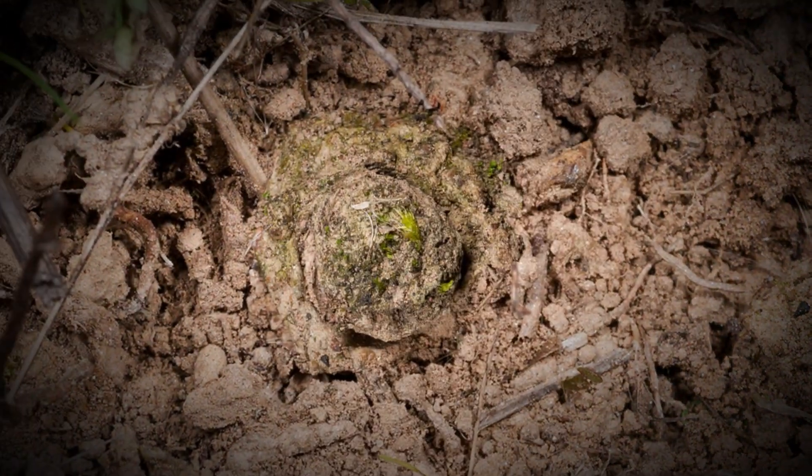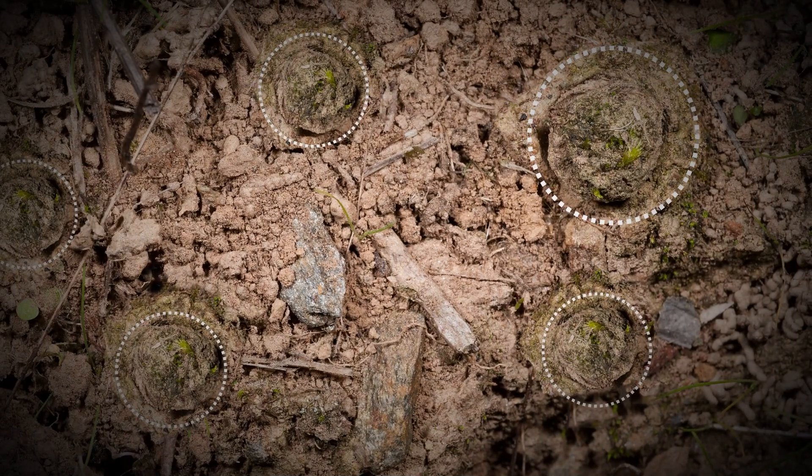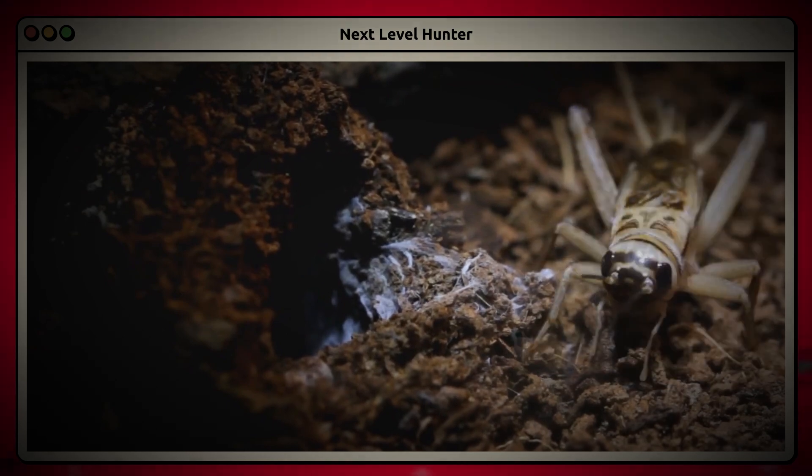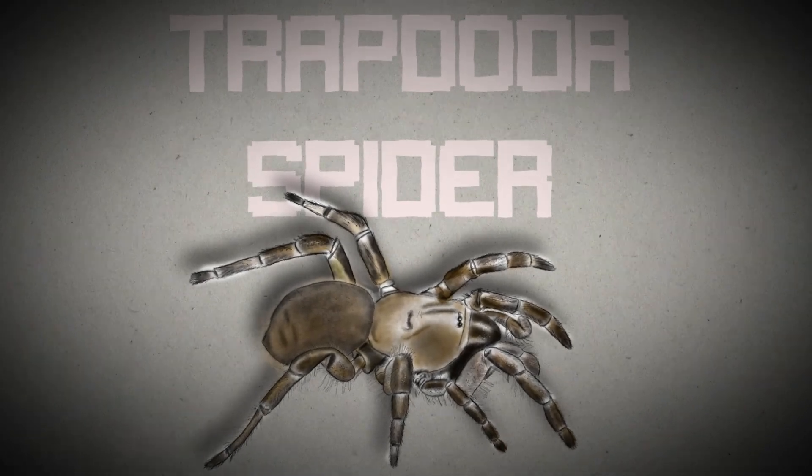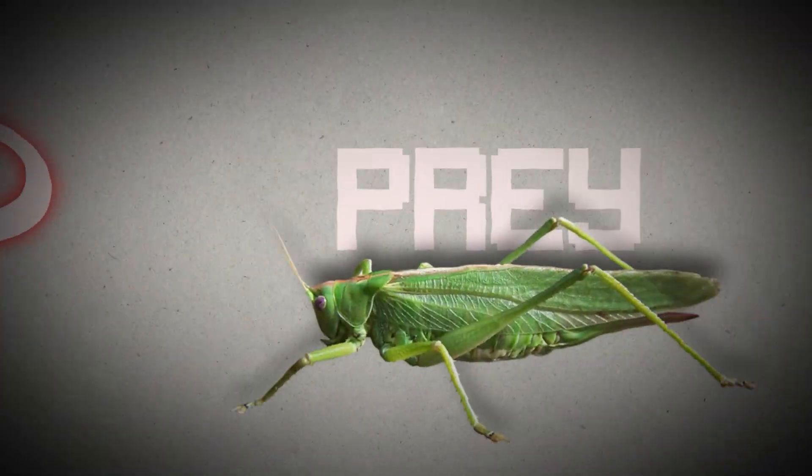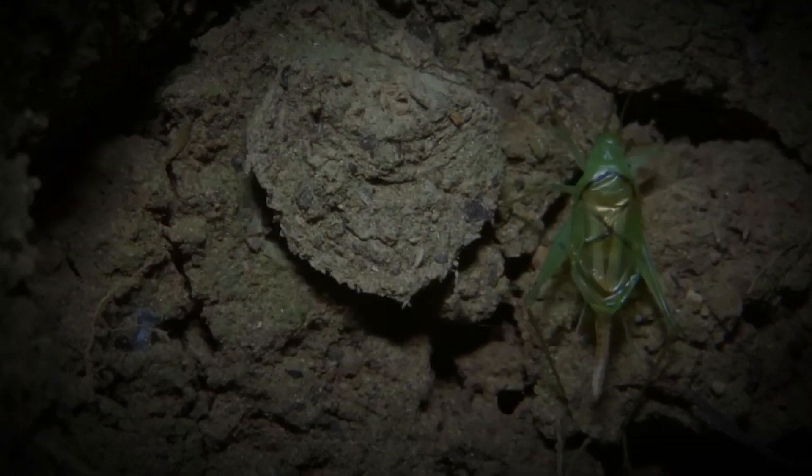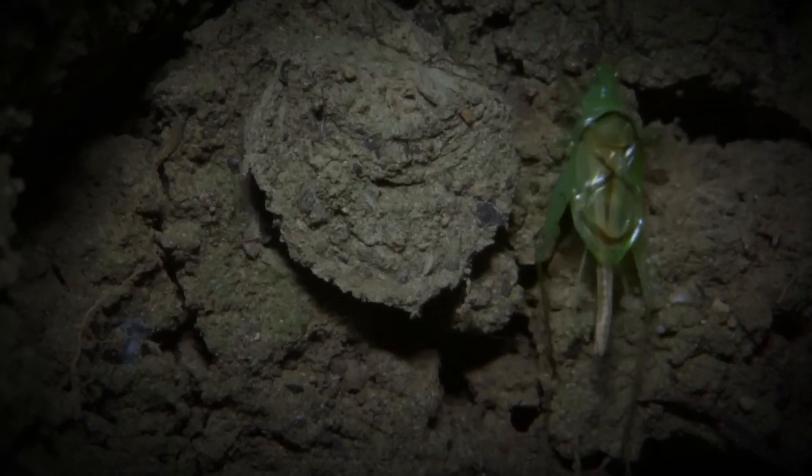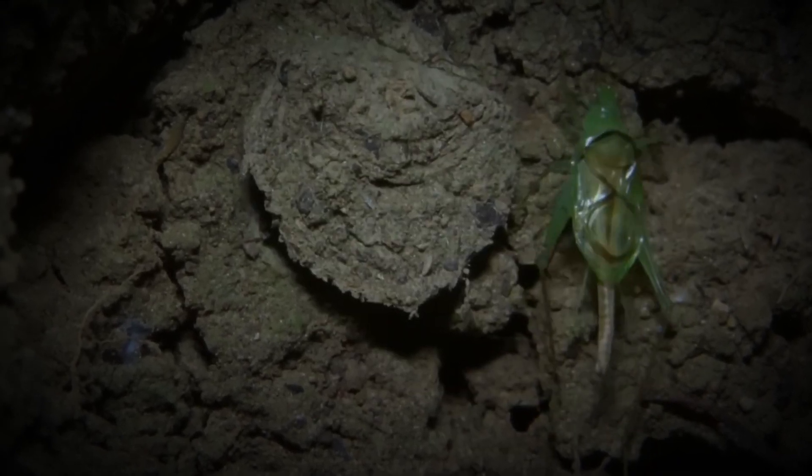And get this, some species of trapdoor spider even create fake entrances to their burrows to throw off potential predators. These little guys are seriously next level when it comes to hunting. So how does the trapdoor spider use its incredible hunting technique to catch its prey? Well, it starts by patiently waiting in its burrow, hidden from view. When an unsuspecting insect or small creature comes by, the trapdoor spider strikes with lightning-fast speed, grabbing its prey and pulling it back into its burrow to devour.